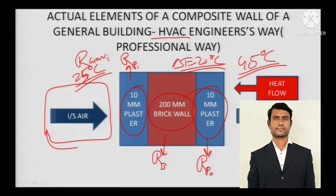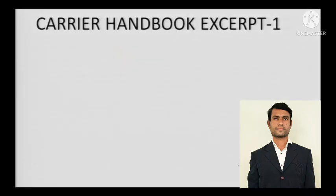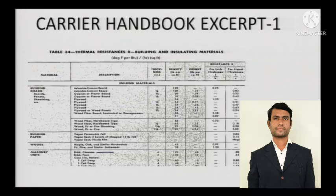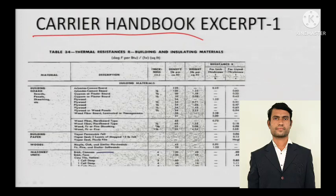The formula remains the same: Q equals Delta T divided by R. But here we will do the practical approach — something you won't find in your textbooks. This comes from the Carrier Handbook. You might have heard of John Willis Carrier — he is the founder of Carrier Air Conditioning, a reputed organization across the globe.